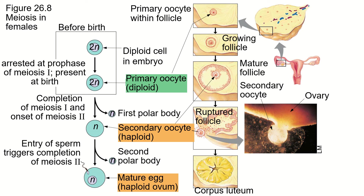All the sperm has to do is deliver a nucleus — just move a nucleus from the male to the egg. The egg has to provide enough nutrition for the embryo to be able to develop until it can get nutrition from somewhere else. In the human, this is going to be when what's called a blastocyst embeds in the wall of the uterus and can start getting nutrition from the mother.